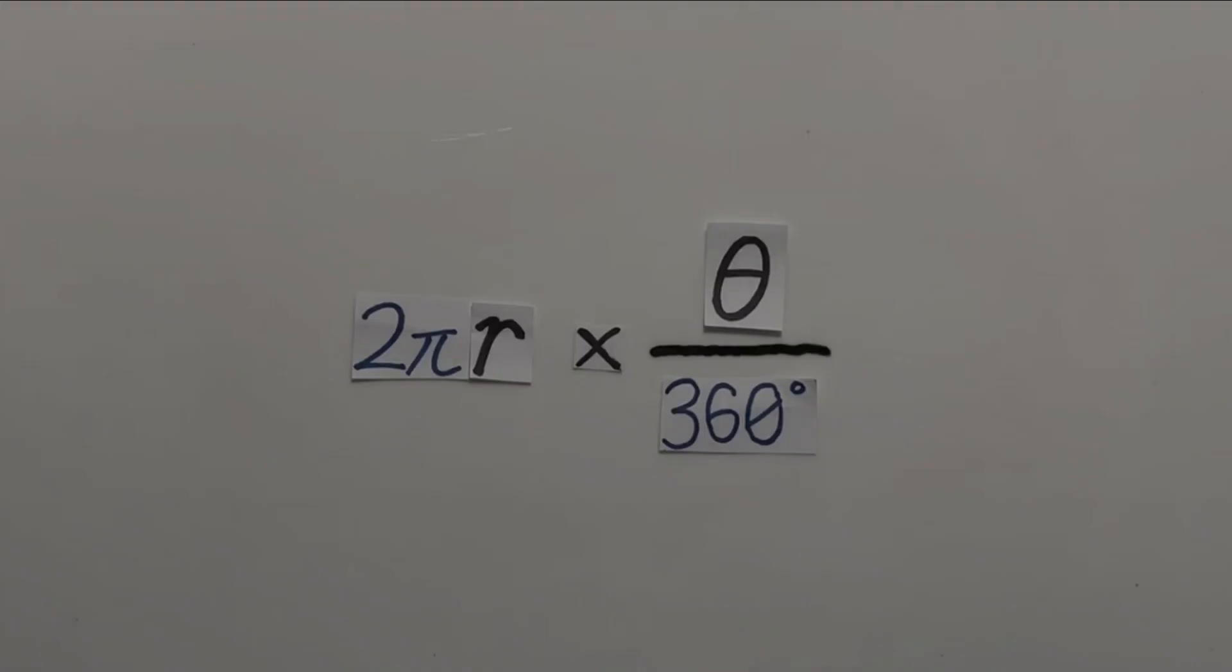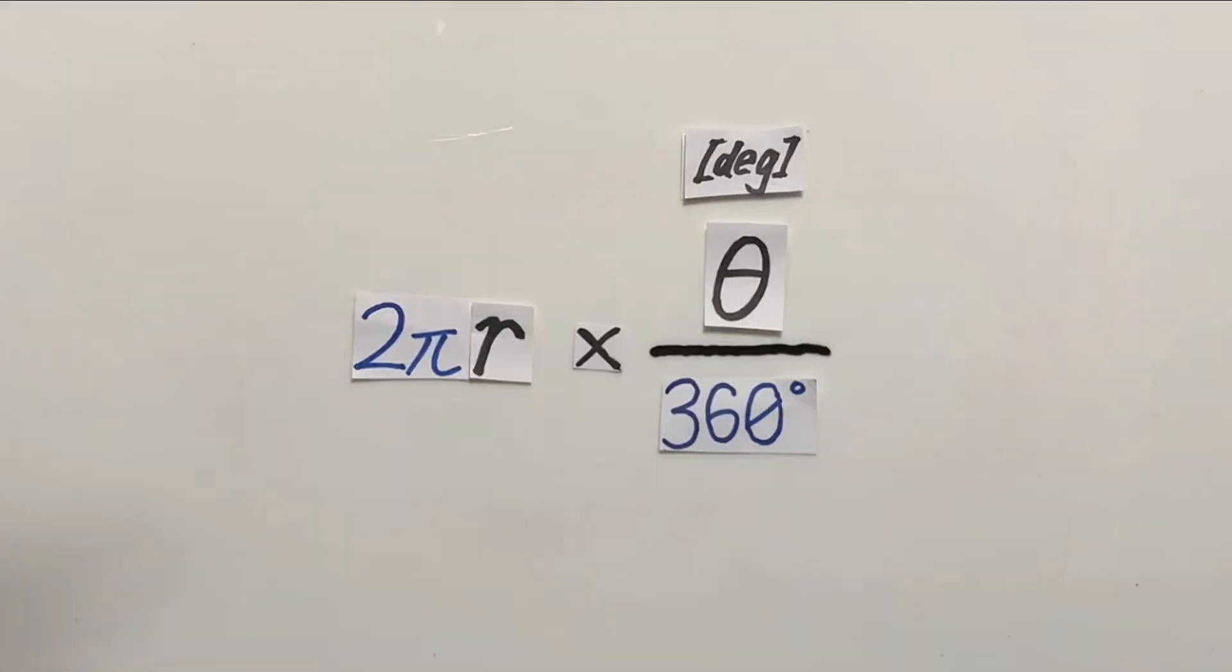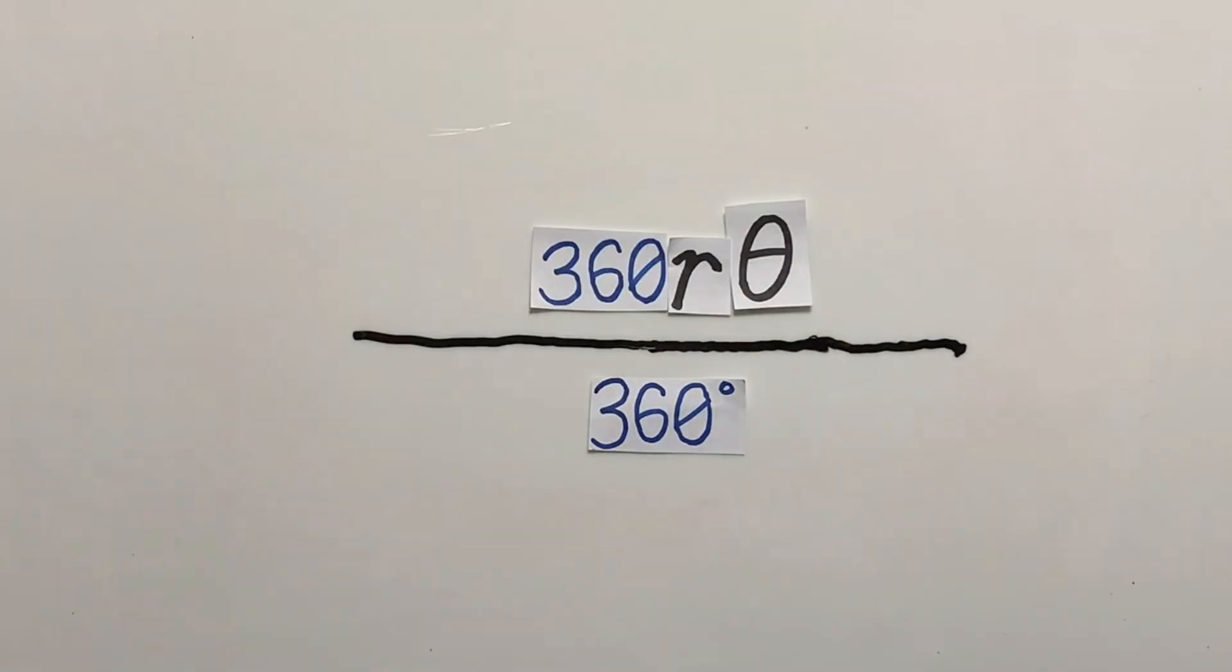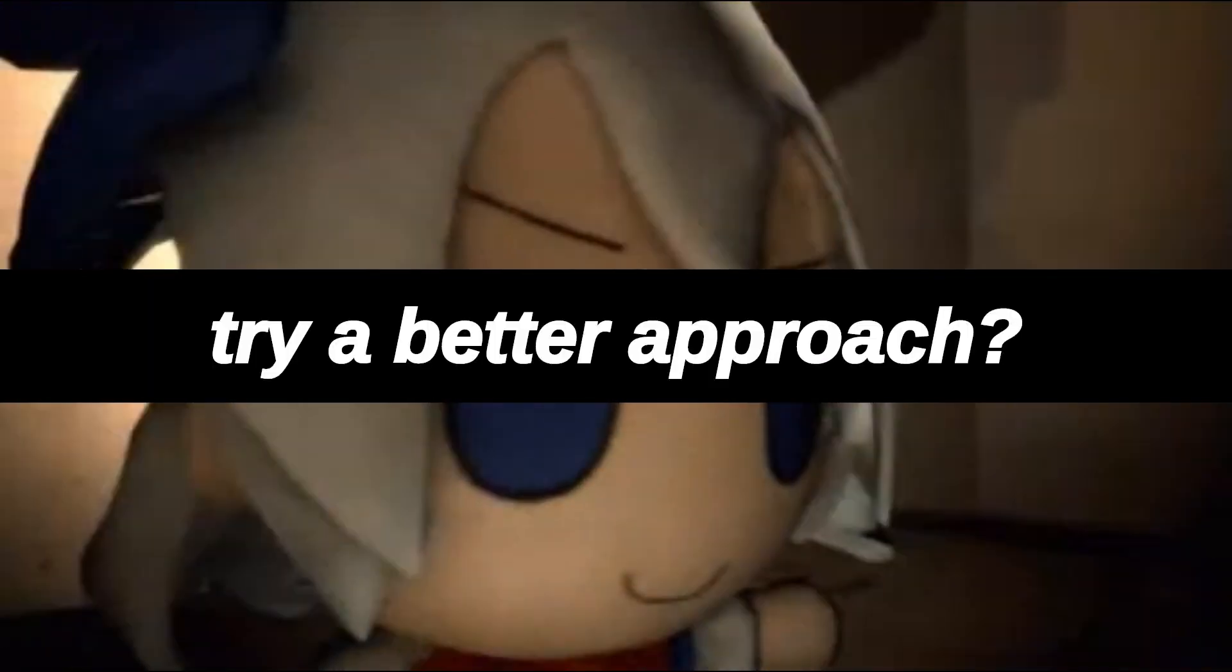You may remember this formula from earlier on to find arc lengths. But this formula uses angles in degrees. So a good question to ask is, what about the radian? Of course, you can try to convert it the painful way. But given the average Form 5 student, you've probably had enough. So let's try a better approach.